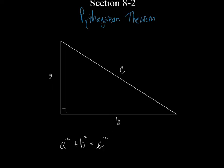I've taught this so many times — four geometry classes plus this. This is now the fifth class that I've taught the Pythagorean theorem. A squared plus B squared equals C squared. The C always represents the hypotenuse, so C is always going to be sitting here by itself. The A and the B represent the two legs of the right triangle.